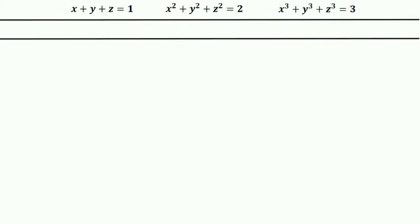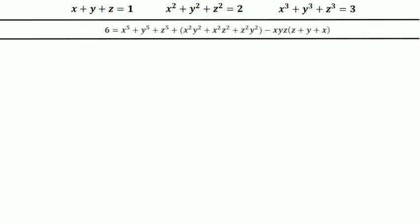Now we move on to the second method. In the second method I promise we are using only two identities: the (a+b+c)² identity and the (a+b+c)³ identity. By solving using only these two identities we get our final answer.